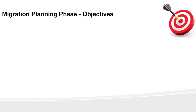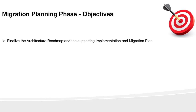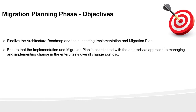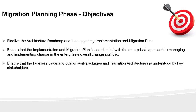Let's look at the objectives. First, the objective of this phase is to finalize the architecture roadmap and the supporting implementation and migration plan. Second, ensure the implementation and migration plan is coordinated with the enterprise approach to managing and implementing changes. What it means is that if there is an enterprise-wide rule or practice — for example, all projects in the organization follow scrum or agile methodology — then you cannot implement your project as a waterfall approach. You need to align with organizational practice. The third important objective is to ensure the business value and cost of work packages and transition architecture is understood by key stakeholders.